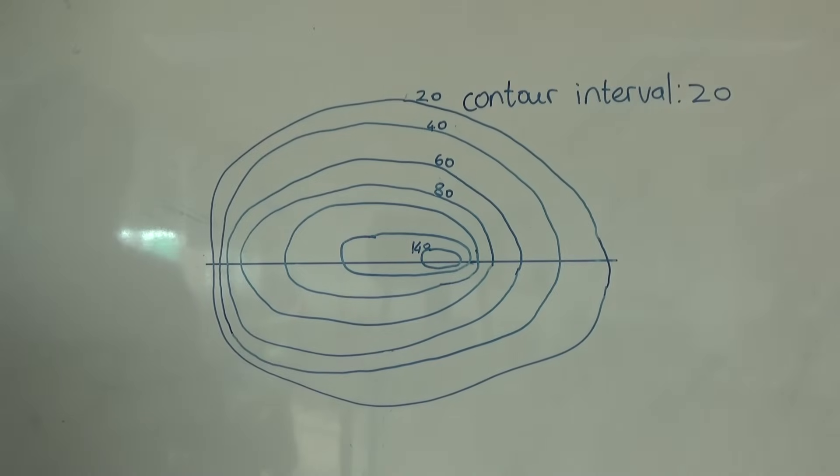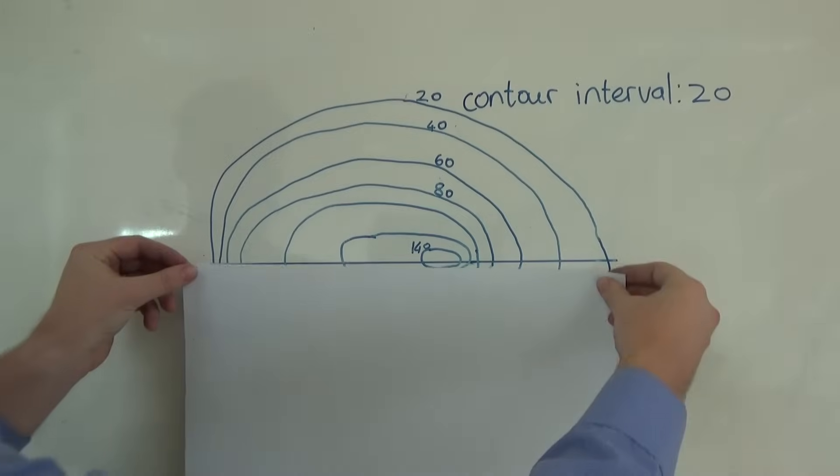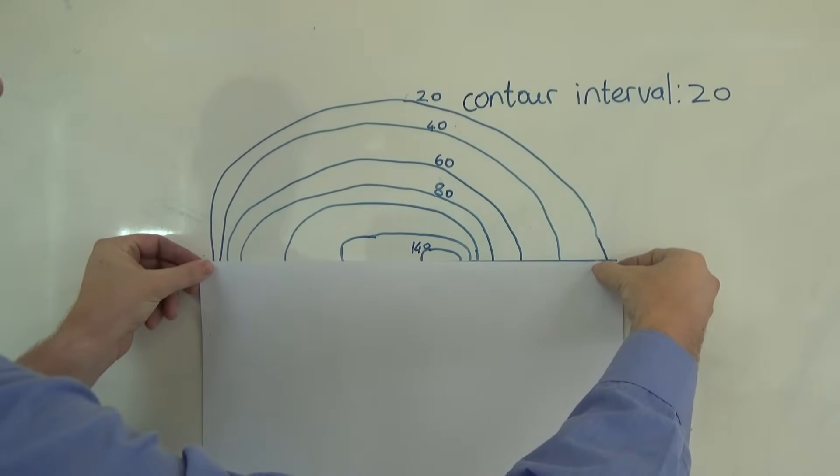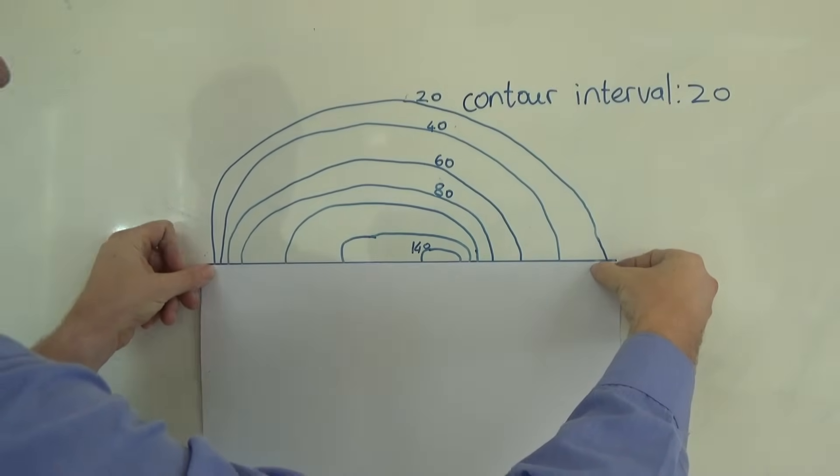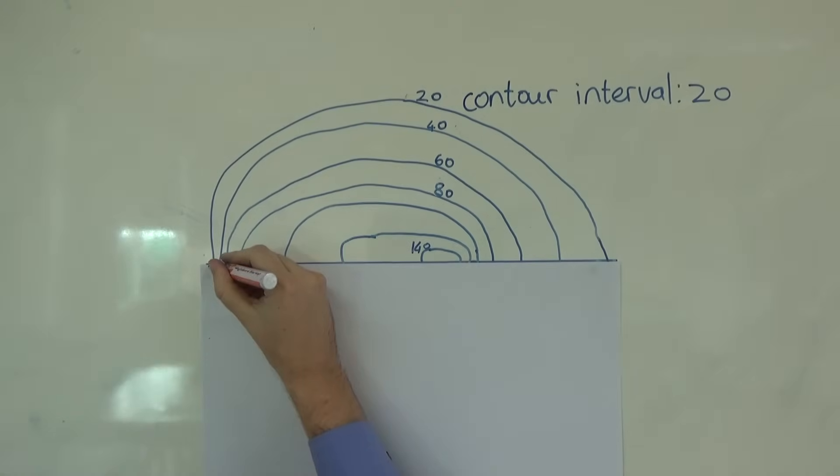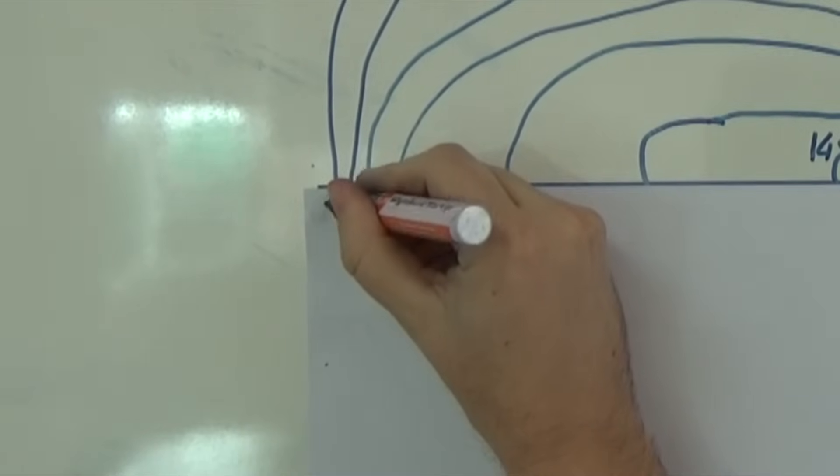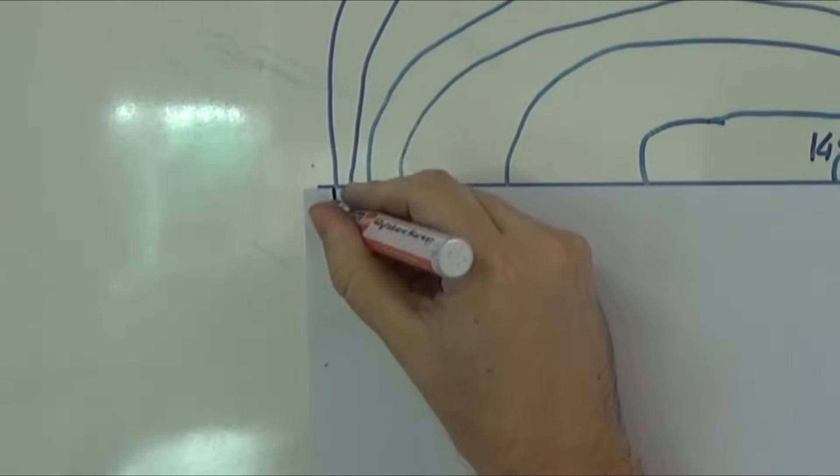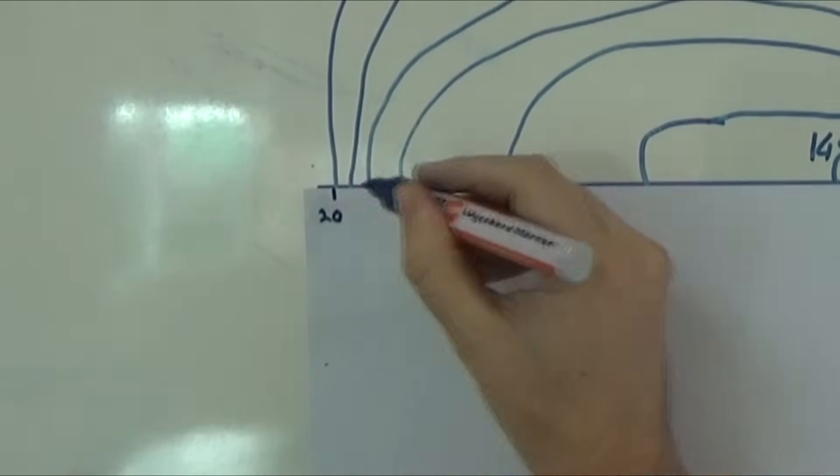Now what I'm going to do first is to put a piece of paper exactly on this line over here. We know that this line is 20 meters above sea level, so here's where we're going to write 20, and let's do the same on the other side.